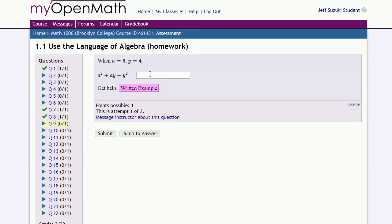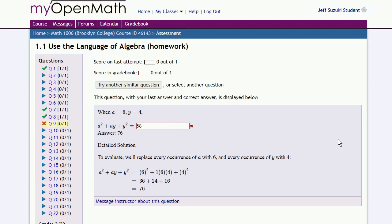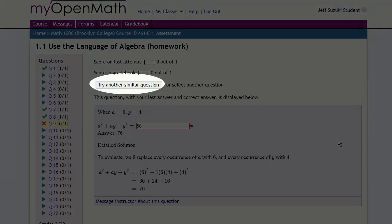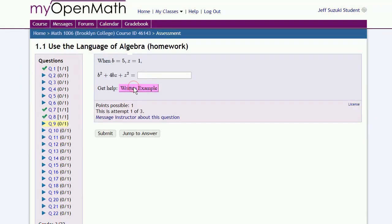And sometimes you'll try a problem and fail to get the correct answer after three attempts. If you run out of attempts on a problem, you can try another similar question. And because you can always do this on the homework, there's no reason to get less than 100%.